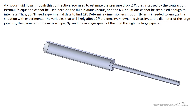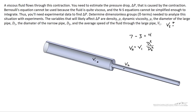You might be thinking that if V1 affects the pressure drop, maybe V2 also affects it, so why not include V2? If that were the case, we'd have seven variables minus three dimensions, equal to four pi terms. However, be careful, because V2 is dependent on V1, D1, and D2. Mathematically, V2 equals V1 times D1 squared over D2 squared. We cannot independently vary V2 without changing V1, D1, or D2, so we can't use V2 here.